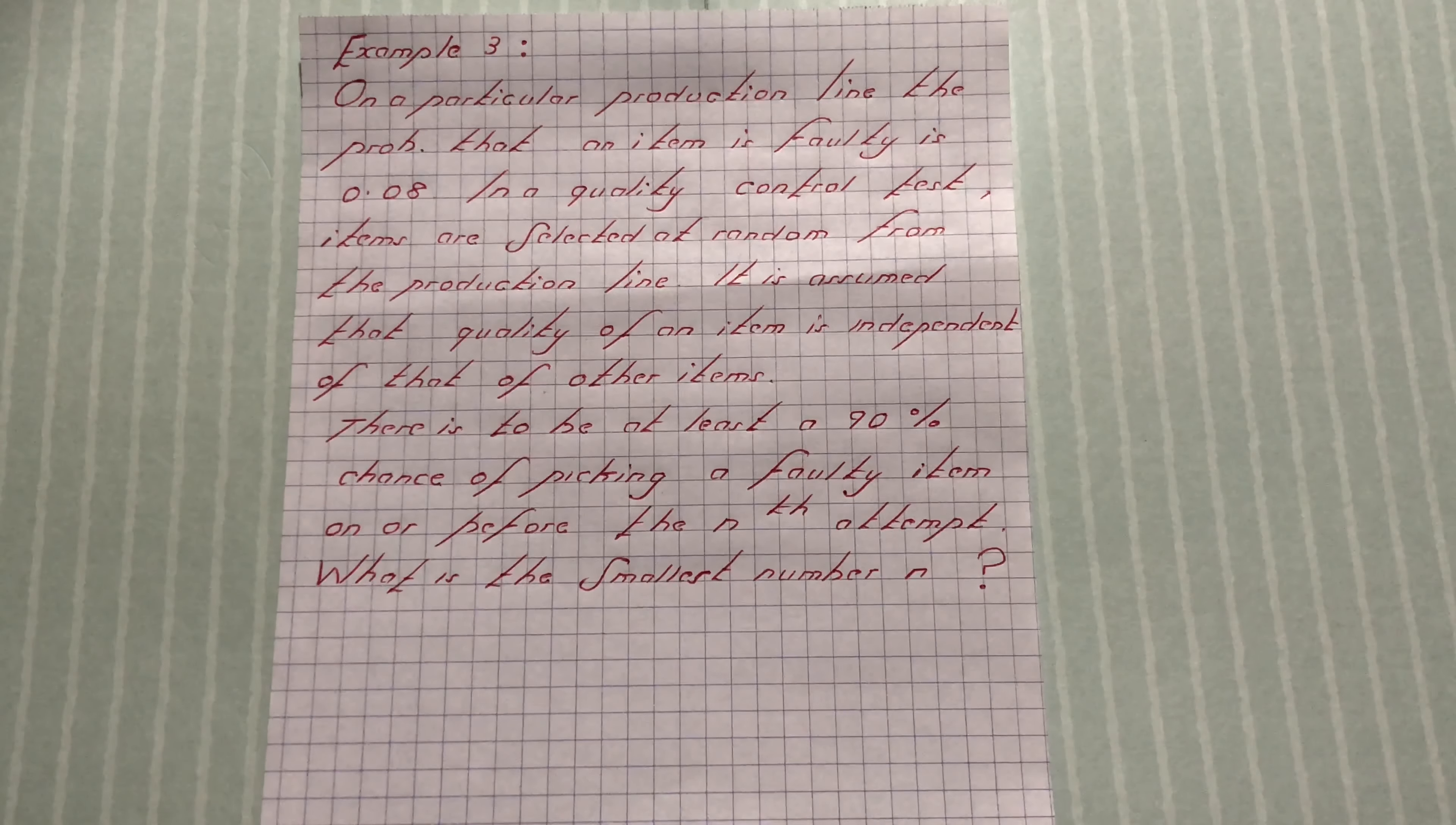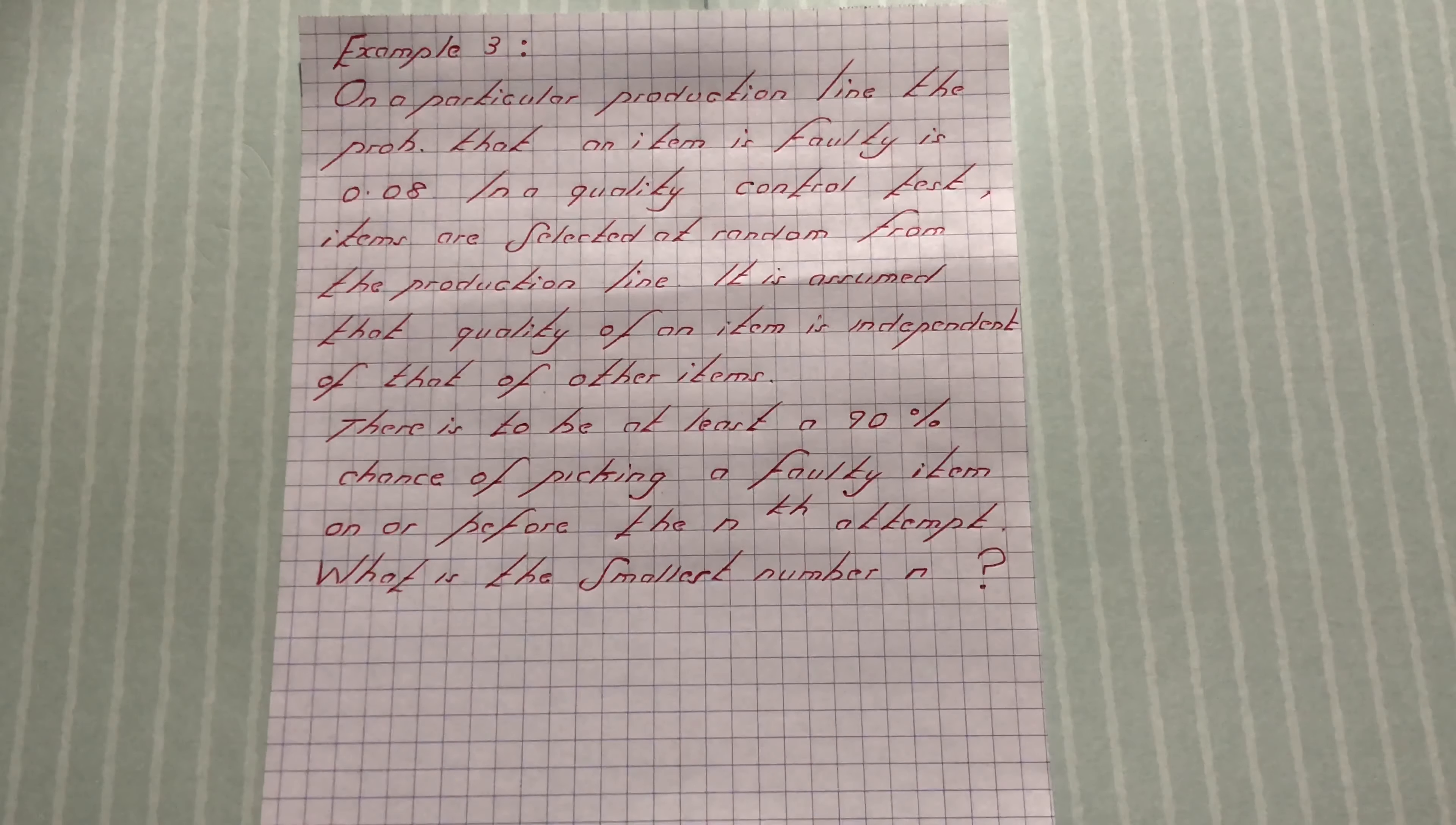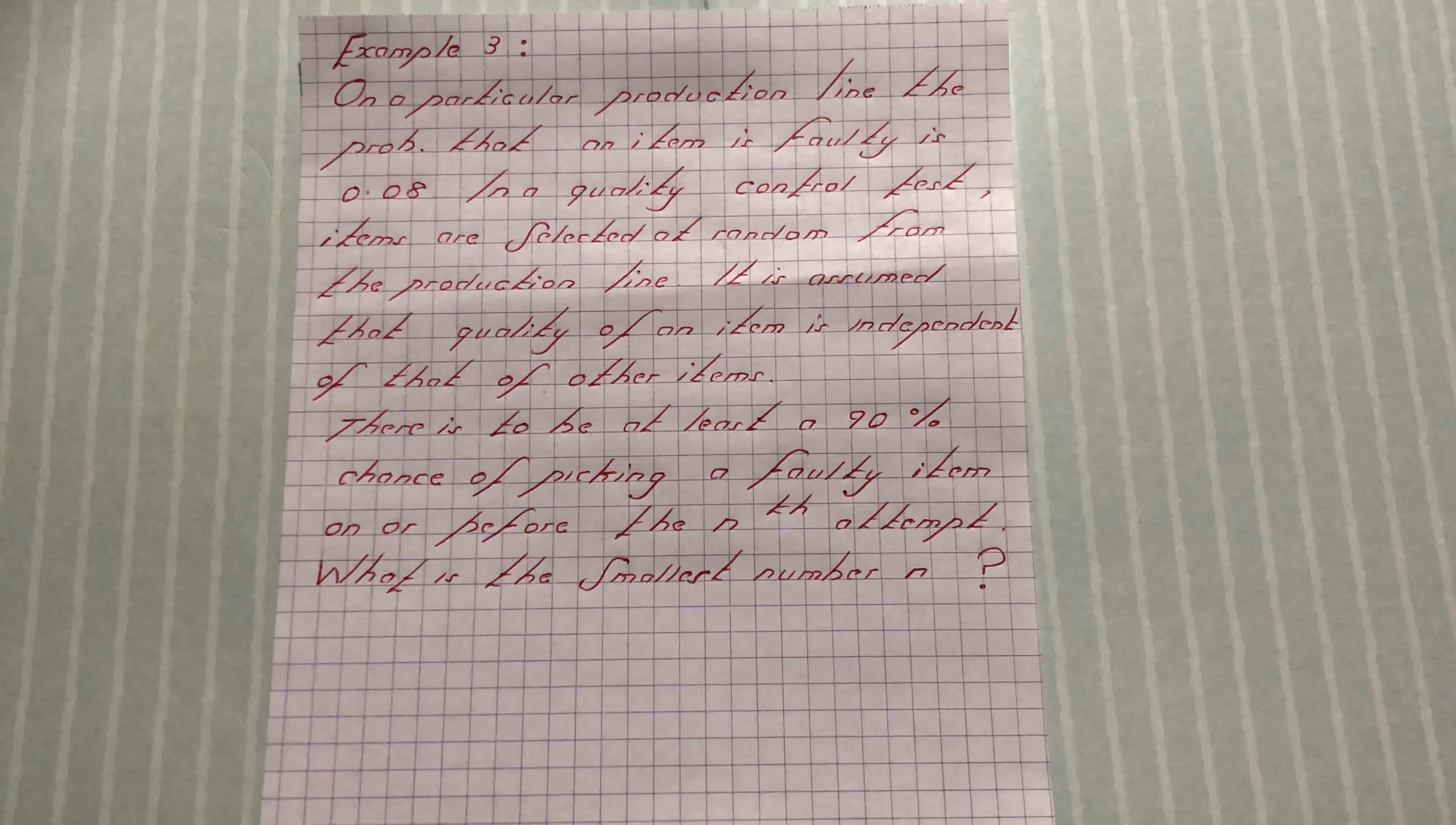In a quality control test, items are selected at random from the production line. It is assumed that quality of an item is independent of that of other items. There is to be at least a 90% chance of picking a faulty item on or before the nth attempt.